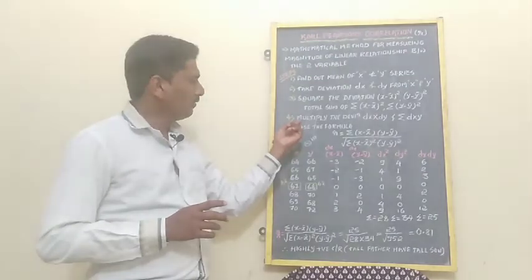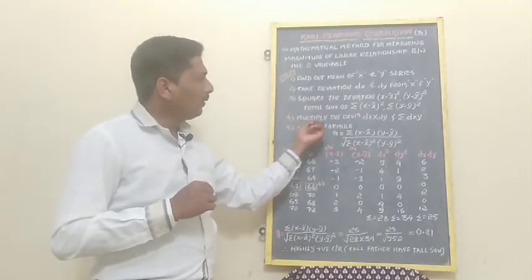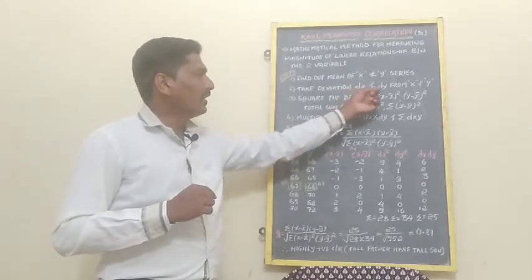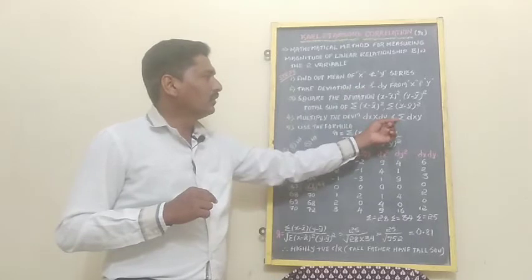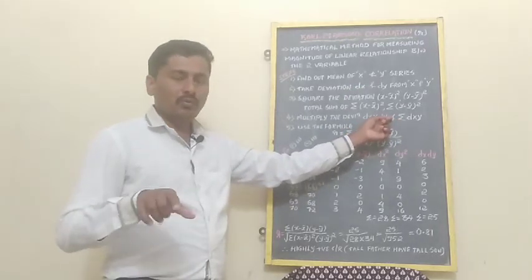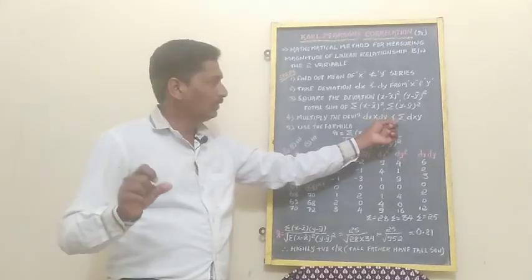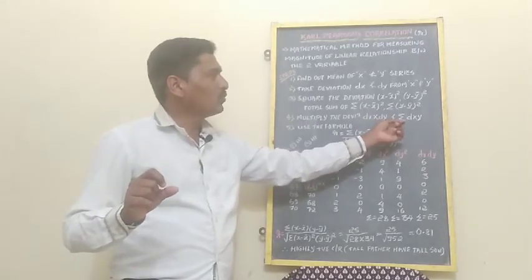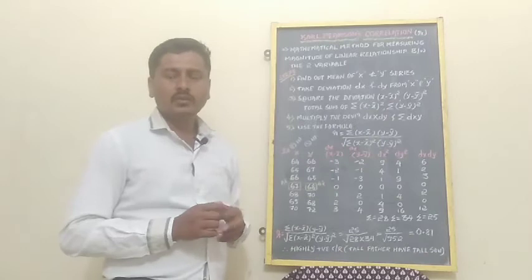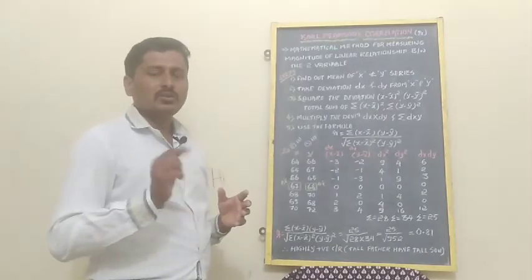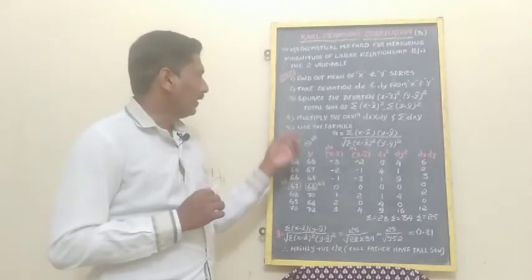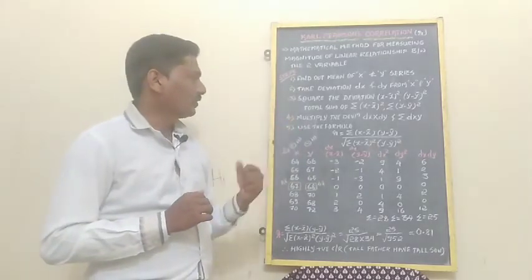Fourth step: multiply the deviations dx and dy. We get dx into dy, and then we total it to get the summation of dx times dy.